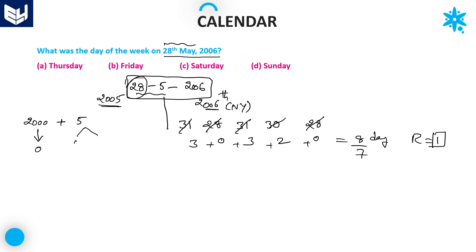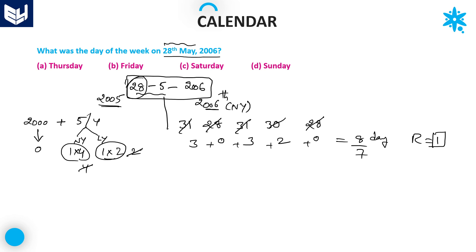In the remaining 5 years, we have only 1 leap year — dividing 5 by 4 gives a quotient of 1, so there is 1 leap year and 4 normal years. Every normal year has 1 odd day and a leap year has 2 odd days. So: 4 normal years give 4 odd days, and 1 leap year gives 2 odd days. Total for 5 years: 4 + 2 = 6.